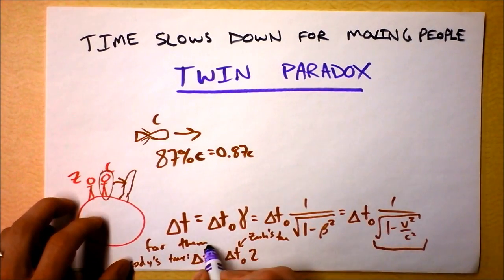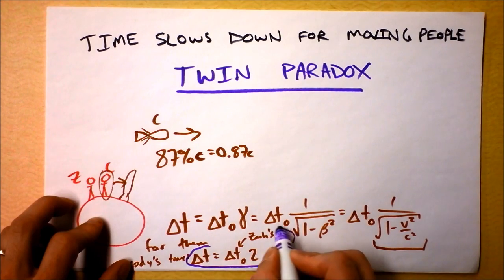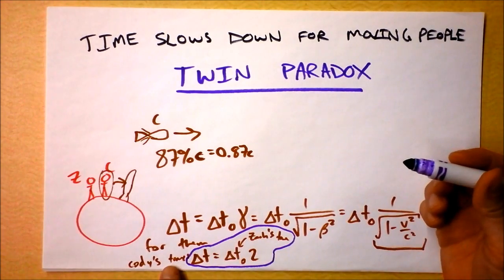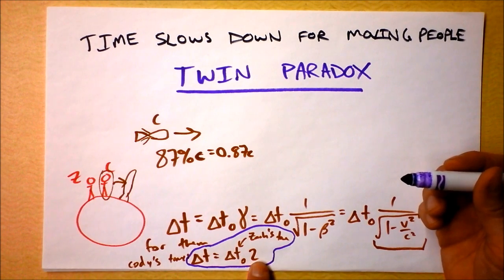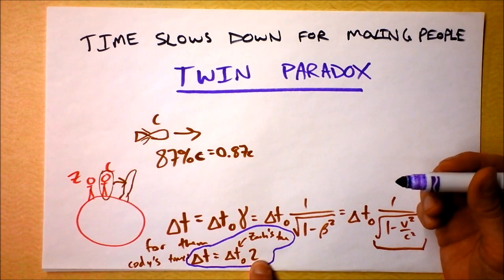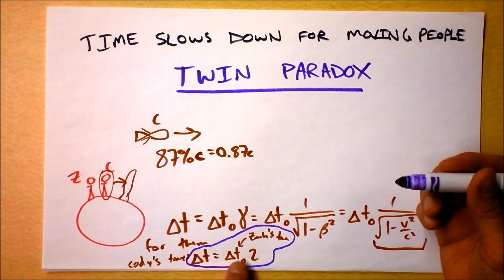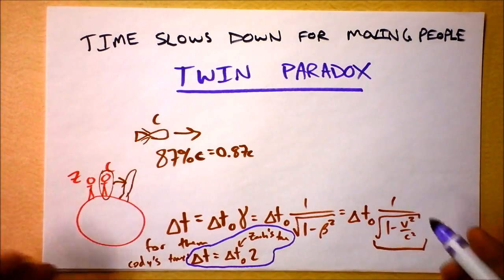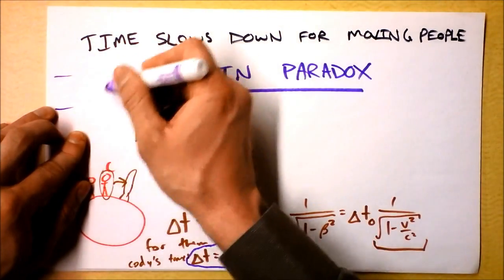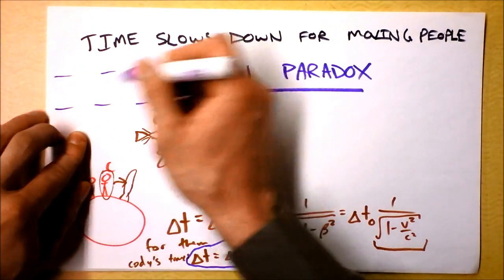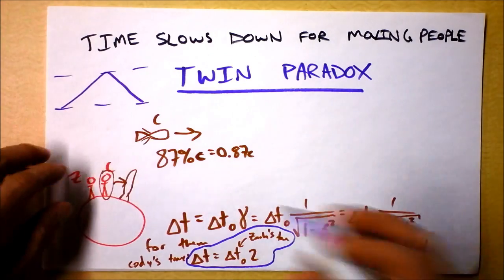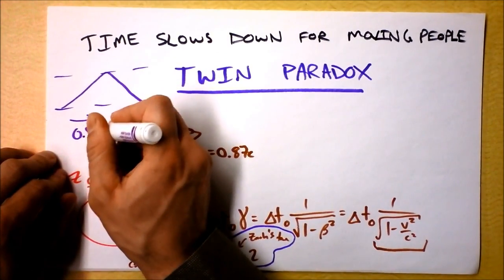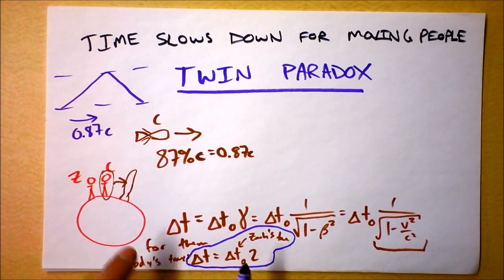So, for them, the time that Zack thinks Cody is experiencing, I guess I could say Cody's time, delta T, equals delta T naught, which is Zack's time, times 2. This equation right here says that Cody's time is running slower than Zack's time. That factor of 2 says it takes twice as long for Cody to get something done as it does for Zack to get something done. Like, a light clock to go from this position to that position to that position. The light will go, boo, boo. It takes twice as long if that velocity there is 0.87c.